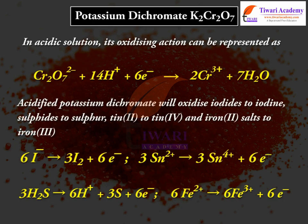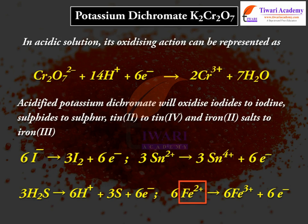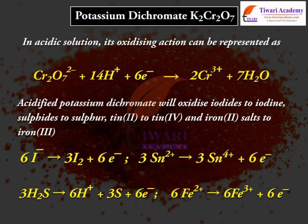Acidified potassium dichromate will oxidize iodides to iodine, sulfides to sulfur, tin(II) to tin(IV), and iron(II) salts to iron(III). The half-reactions are: 6I⁻ → 3I₂ + 6e⁻; 3Sn²⁺ → 3Sn⁴⁺ + 6e⁻; 3H₂S → 6H⁺ + 3S + 6e⁻; 6Fe²⁺ → 6Fe³⁺ + 6e⁻.